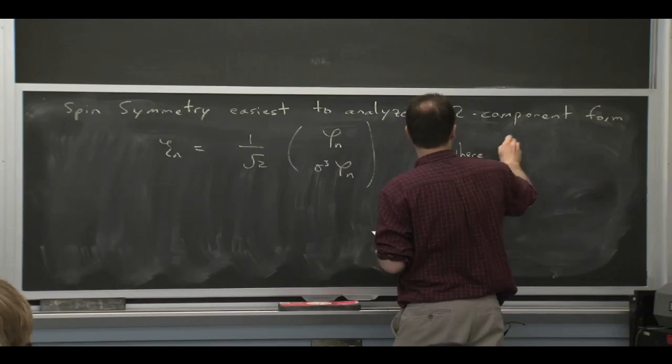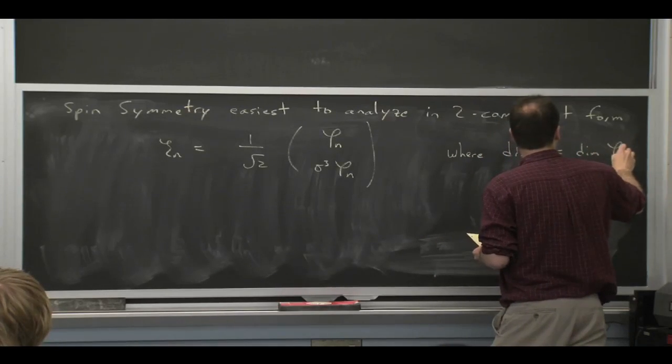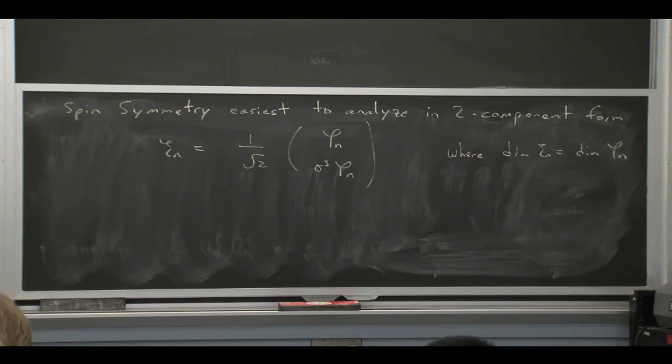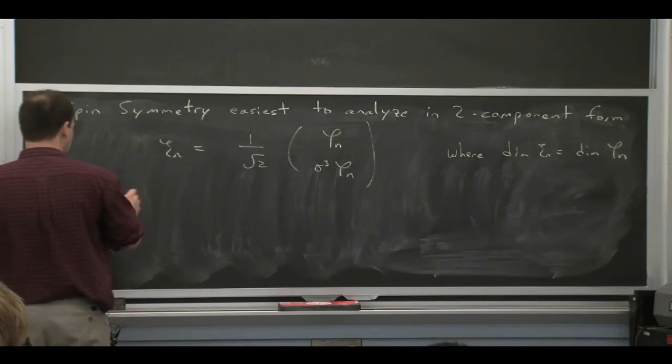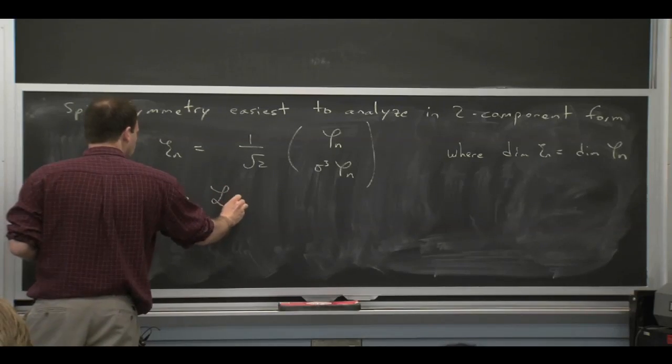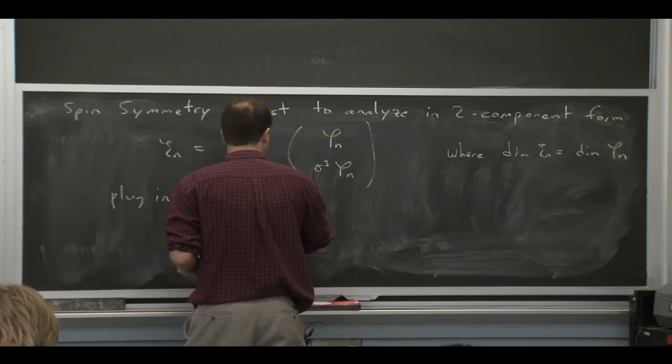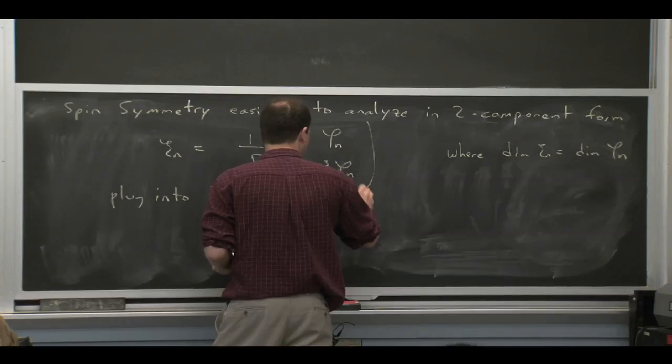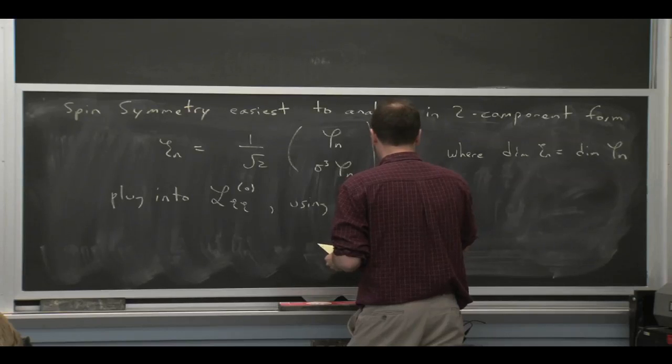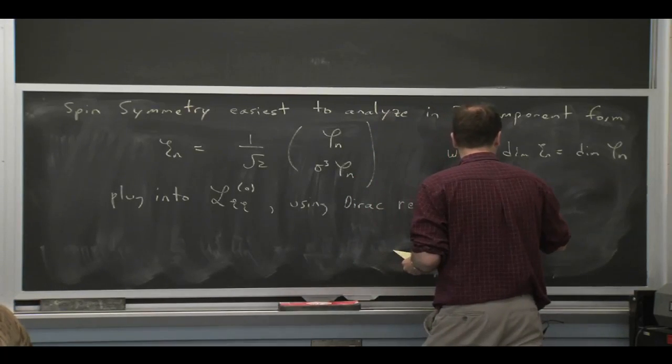So take Cn and write it as follows with this phi n as two components. And I've set things up so the dimensions of Cn are equal to the dimensions of phi n. So I can take that formula, plug it into our SCT Lagrangian, and then I can, using the Dirac representation for the gamma matrices, write out a Lagrangian for this phi n. So that requires doing a bit of algebra, which I will take you through.